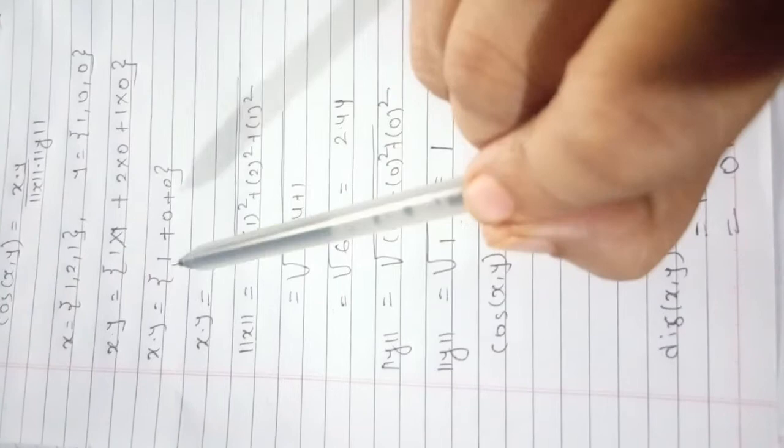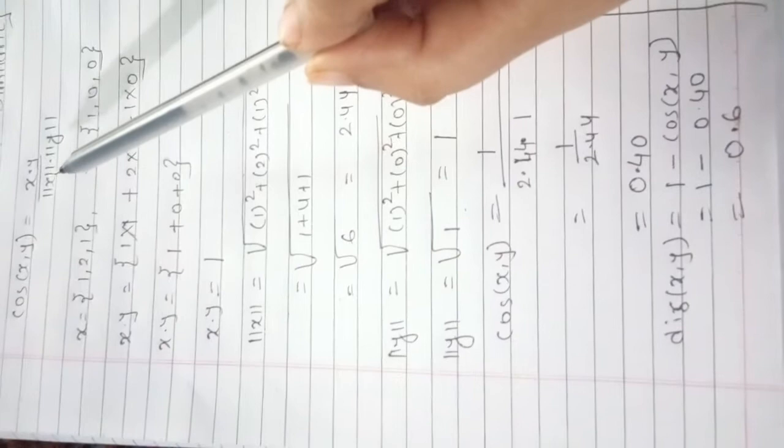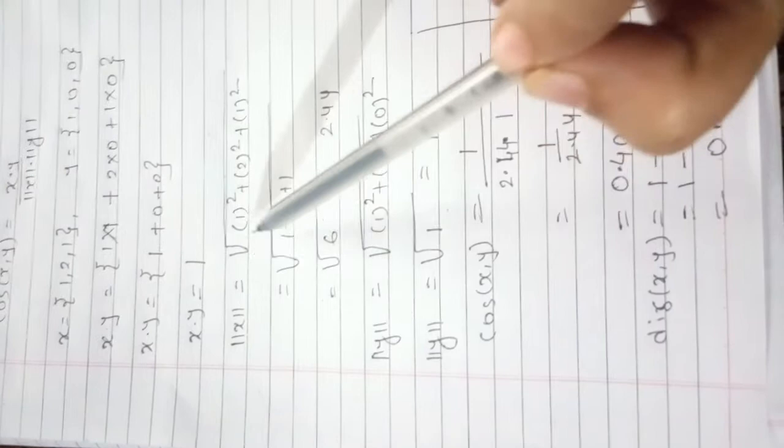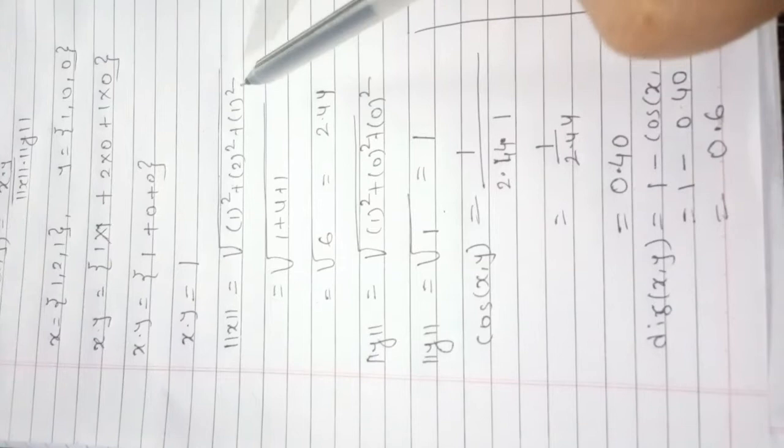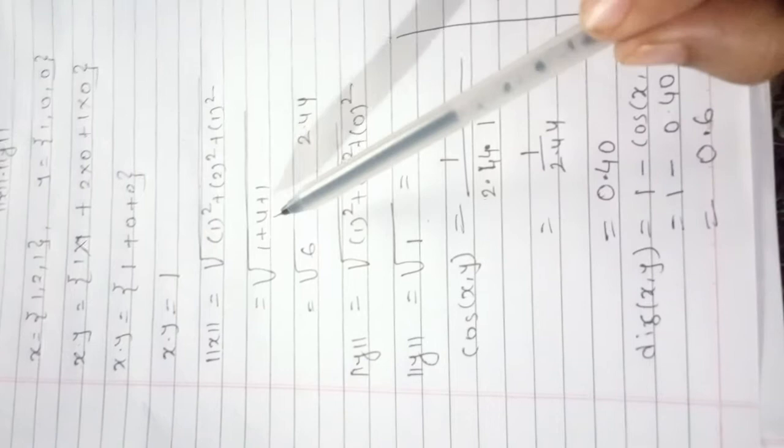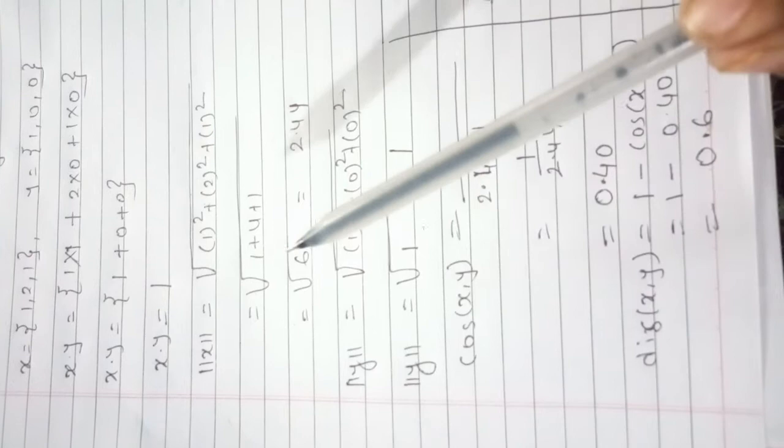Next, find out the mod x. How to find out the mod x? Root, take this 1 square plus 2 square plus 1 square. 1 square is 1, 2 square is 4, 1 square is 1. So 1 plus 4 plus 1, that is 6, and the root 6 is equal to 2.44.